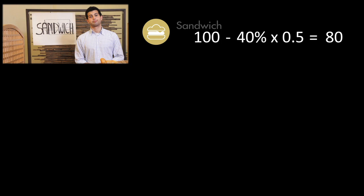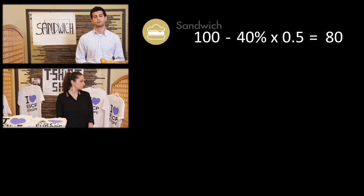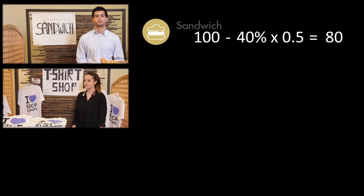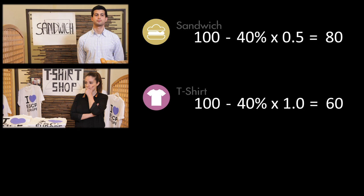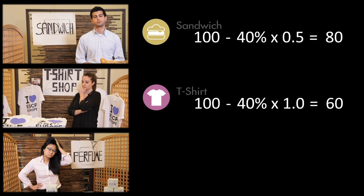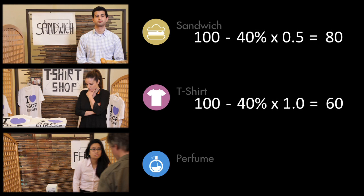Let us recap. Pierre's business has a beta of 0.5. In a market decreasing by 40%, he will only sell 80 sandwiches — that is minus 20%. Penelope's product reacts like the market since her activity has a beta of 1. In a market decreasing by 40%, she will only sell 60 t-shirts — that is minus 40%. Liane's product overreacts compared to the market since her activity has a beta of 1.5. She will only sell 40 perfumes — that is minus 60%. It's a catastrophe!